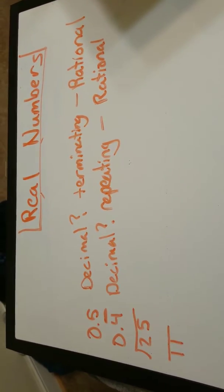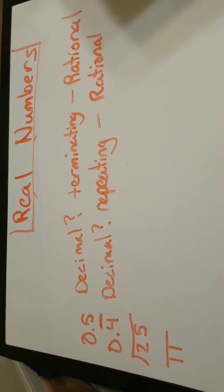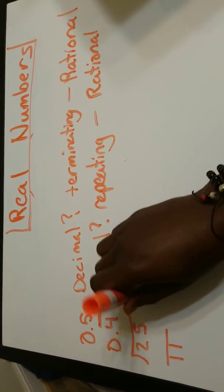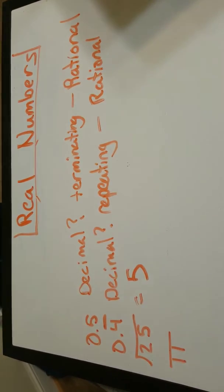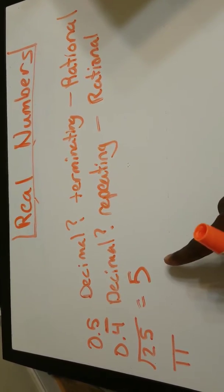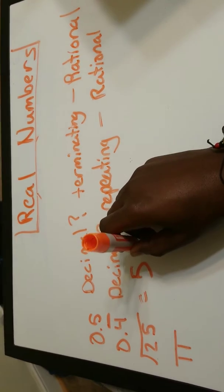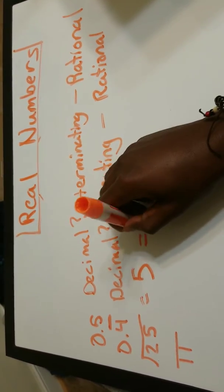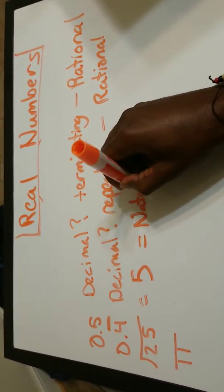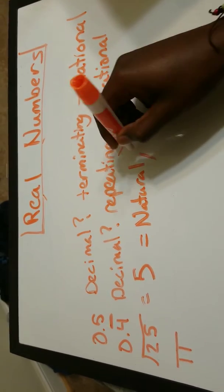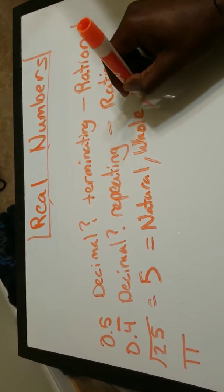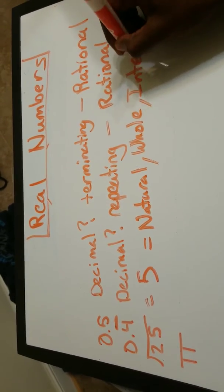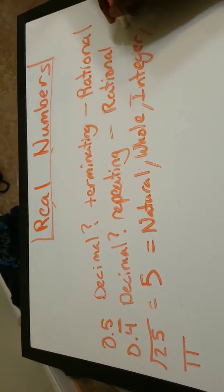Oh, we have a square root for number 3. Square root of 25 is 5. So now this is a regular number. We have a few options with this one. This is going to be a natural, whole, integer, and rational.